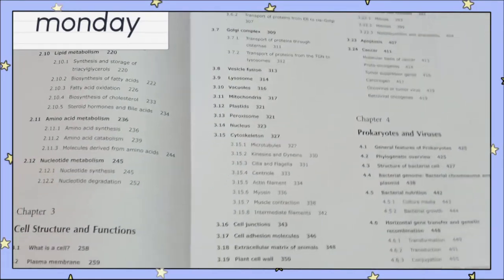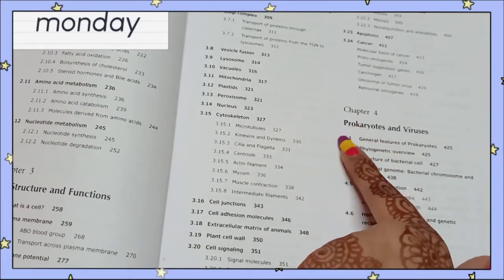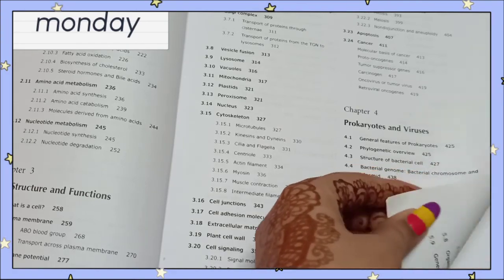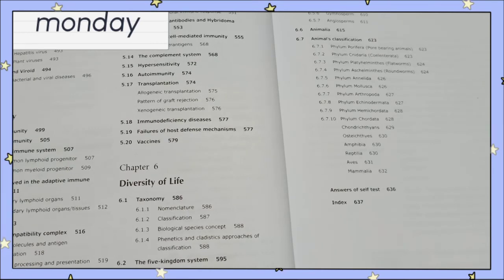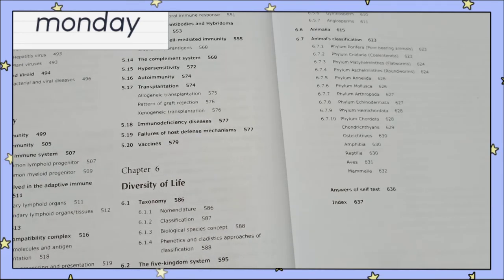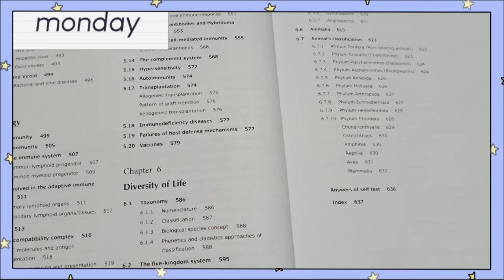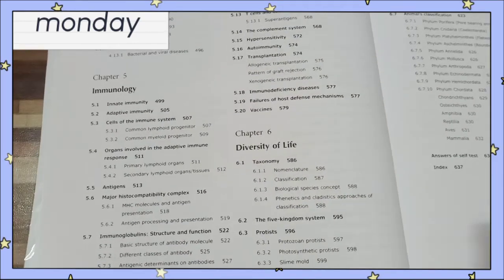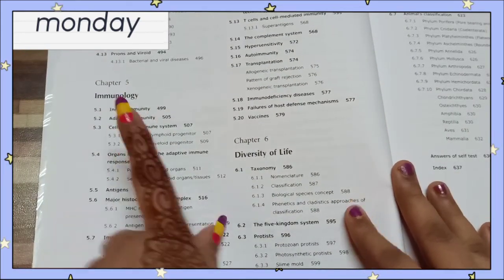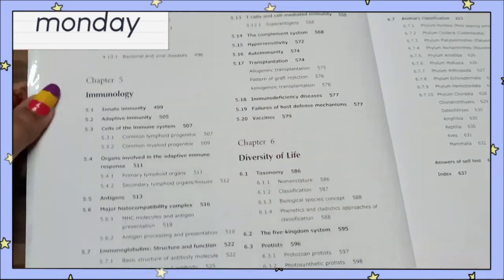If you are preparing for NET exam, chapter 4th is of Prokaryotes and Viruses and it is given in a very simple and easy language that everyone can understand. If they come from a Hindi medium background, they can also understand easily from this book. Chapter 5 is of Immunology, chapter 6 is of Diversity of Life.